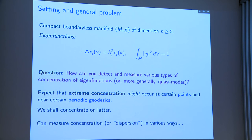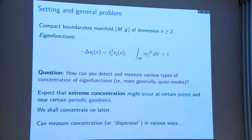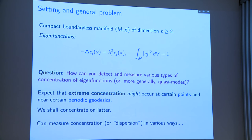You broaden your horizons to consider not just eigenfunctions but near-eigenfunctions, quasi-modes. You expect extreme concentration at certain types of points, leading to bad sup norms or bad LP norms for large p. You also might expect concentration near periodic geodesics — if concentration is on a set, you'd expect the set to be invariant under the flow, so the natural thing is periodic geodesics. I'm going to concentrate on the latter: geodesics are bigger than a point, so you'd expect to detect concentration along periodic geodesics in LP norms for relatively small p.